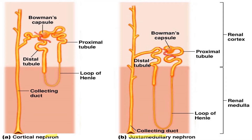The difference in the cortical and juxtamedullary nephron is that the loop of Henle differs in size. You can see here that the loop of Henle of the cortical nephron is short, and the loop of Henle of the juxtamedullary nephron is long. This is the main structural difference between both these nephrons.